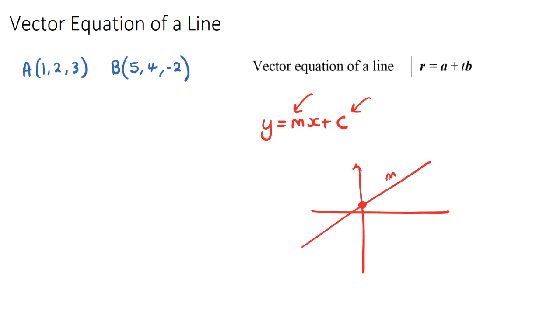We needed a direction, which is the gradient, and we needed some point, which was often given in our questions. And it's actually very similar to the vector equation of a line.